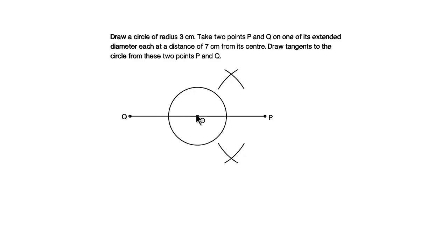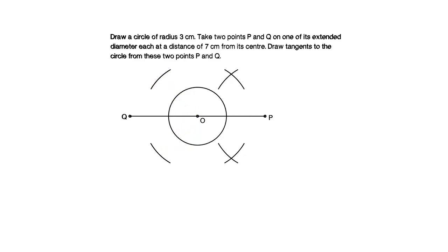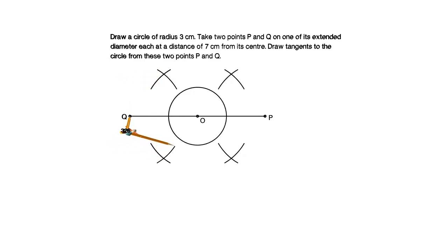Keep your compass at point O and draw one arc above line OQ and one arc below line OQ. Without altering the compass distance, keep your compass at point Q and draw an arc above and below the line intersecting the previous arc. Now join the intersection points to get the perpendicular bisectors of OQ and OP.